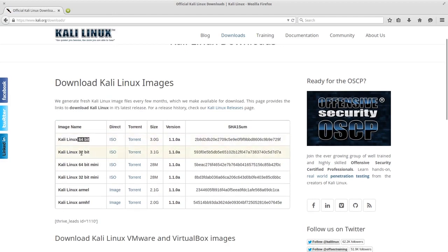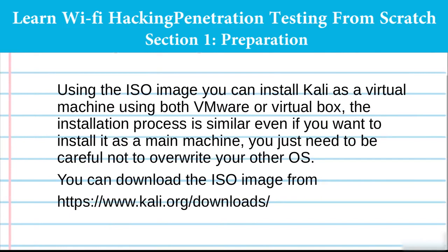Download your flavor — 64-bit or 32-bit depending on your system — and make sure it's the ISO. You can download it as a torrent or as a direct ISO download. When installing as a virtual machine using VirtualBox or VMware, you will not be able to override your main operating system — it's completely risk-free. Even if you do anything incorrectly, it will not affect your main machine because VMware and VirtualBox create a virtual computer with virtual RAM, virtual CPU, and virtual everything.